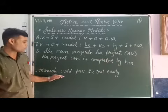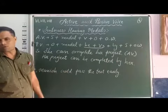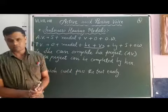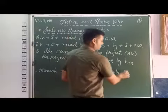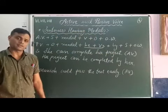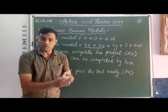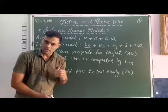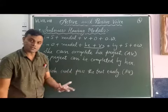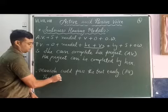Another example: 'Monies could pass the test easily.' The sentence is in active voice as it does not have the 'be' form and V3. We have to transform it into passive voice. First, the object — what is the object in the sentence? 'The test.' So 'the test' is the object.